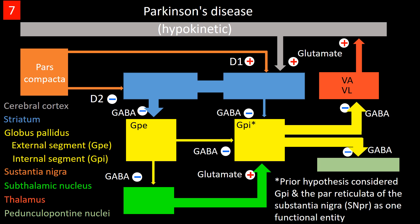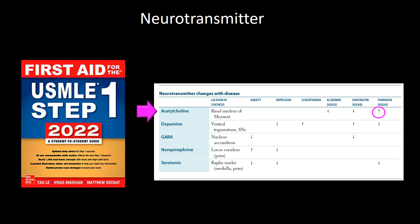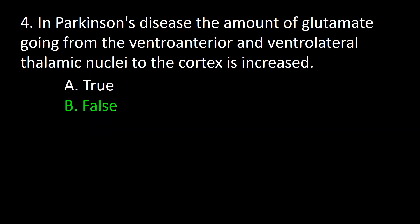The increased function of the GPi is depicted by thicker lines going to the thalamus and pedunculopontine nucleus. This increased GPi function leads to decreased excitation of the cortex by the thalamus. The neurotransmitter pattern in Parkinson's disease includes low dopamine, low serotonin from the raphe nuclei, and high acetylcholine from the basal nucleus of Meynert. So the answer to this question is false — B.